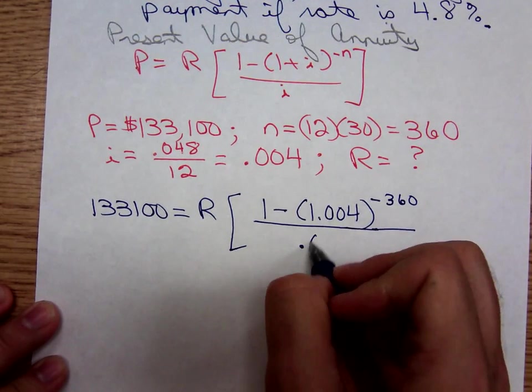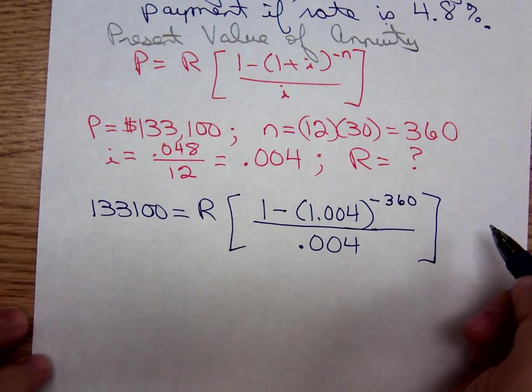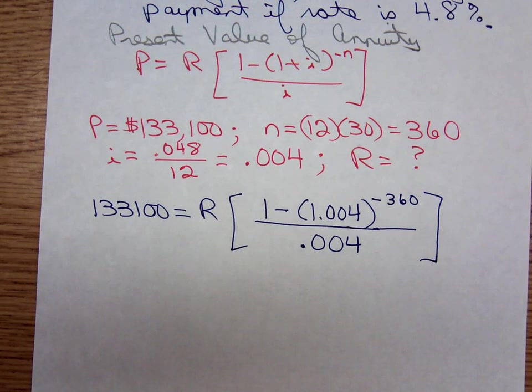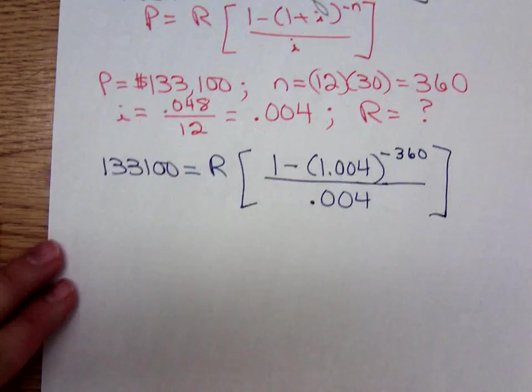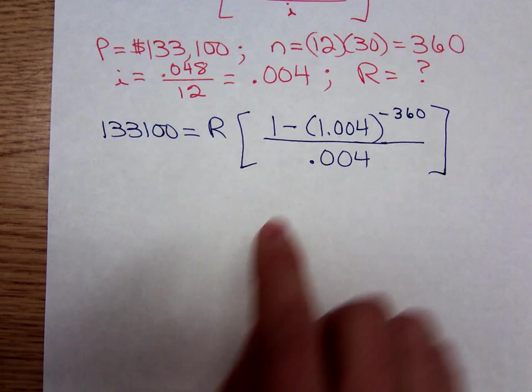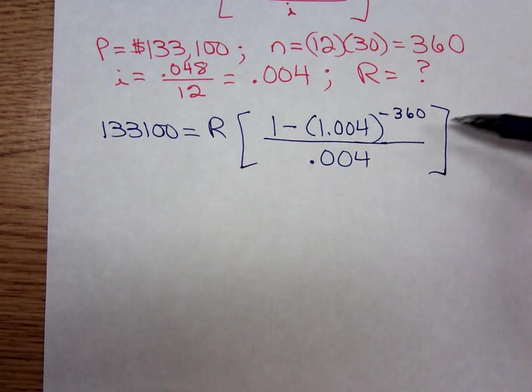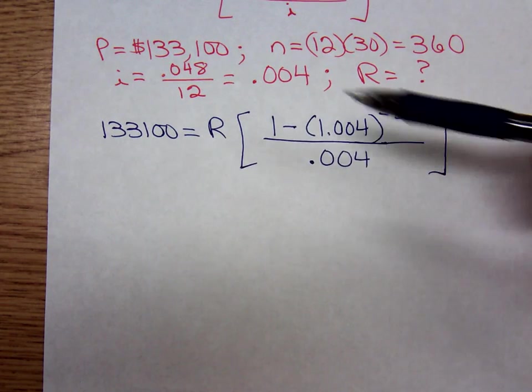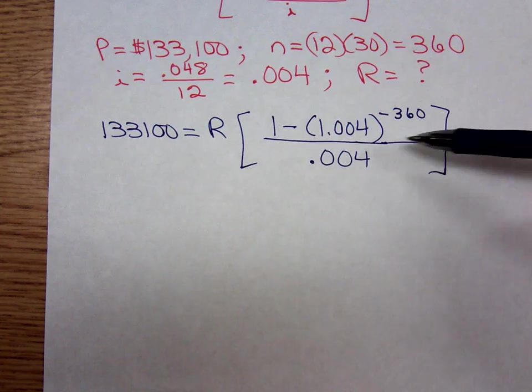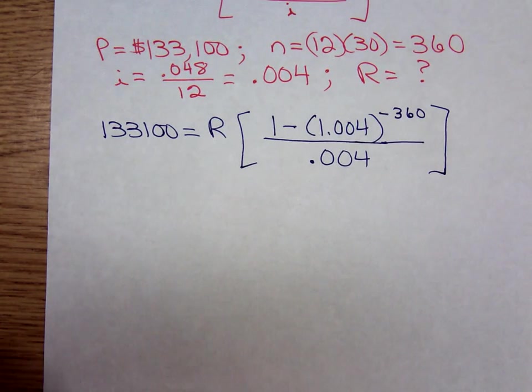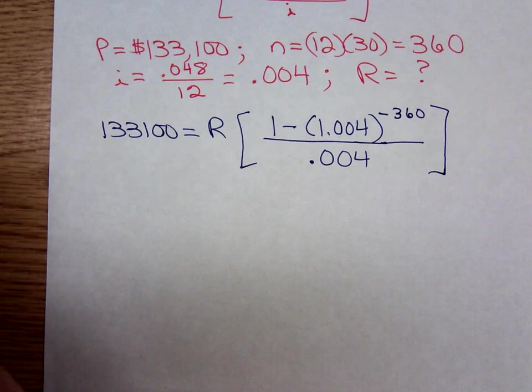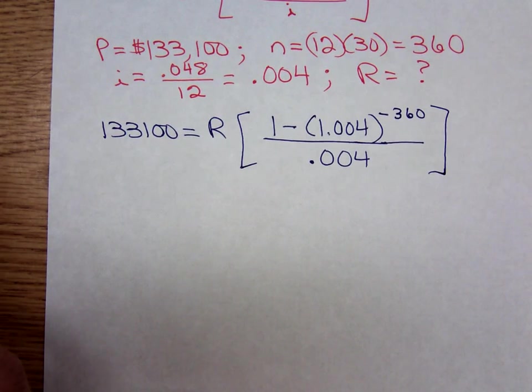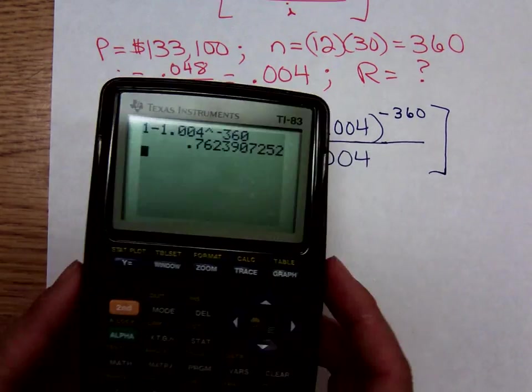And now we'll dig out our calculator. I don't do anything real fancy to punch this stuff in. What I do is I simplify the numerator on the bracket amount, then divide it by the denominator. Once I know that value, to get R by itself—it's R times that number—to undo the multiplication we'll have to divide. So I need 1 - 1.004 raised to the negative 360.